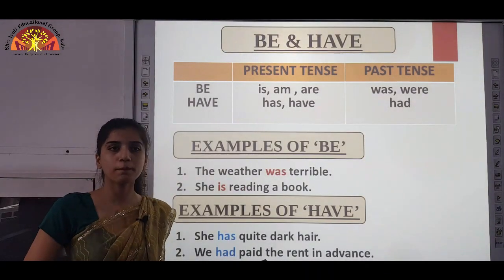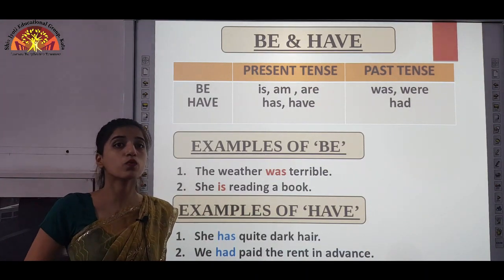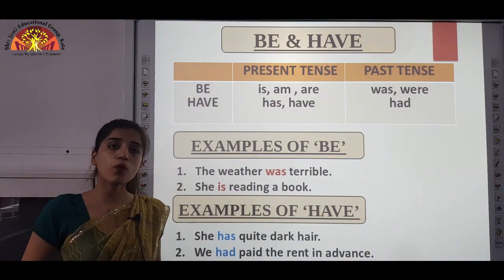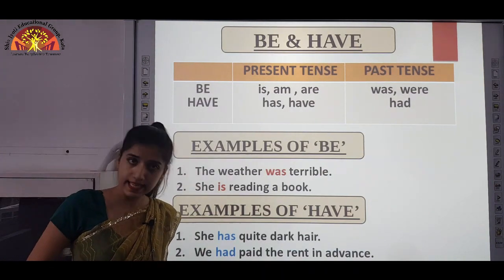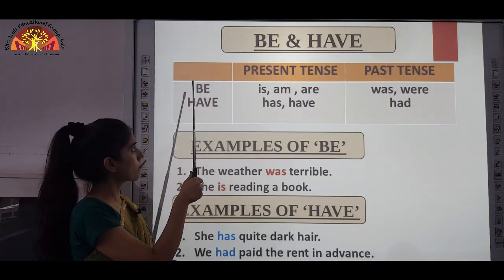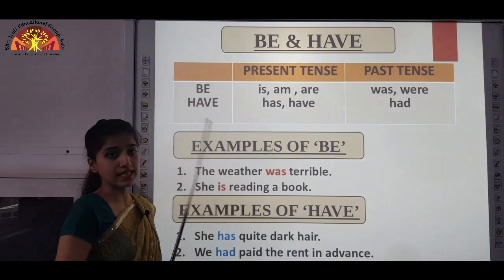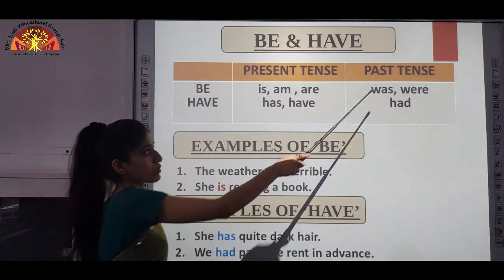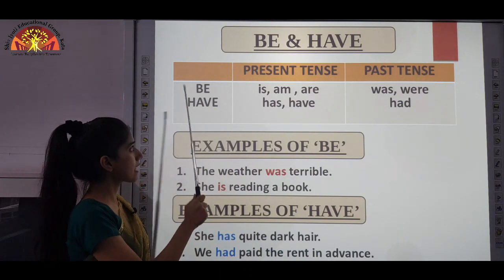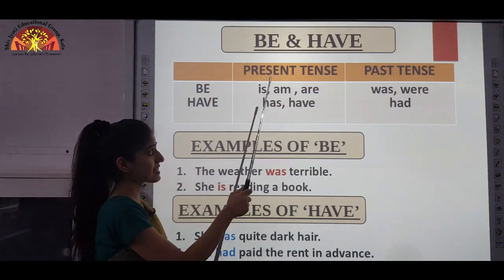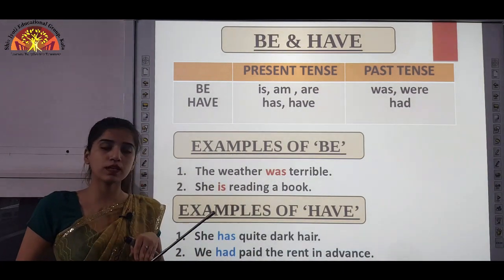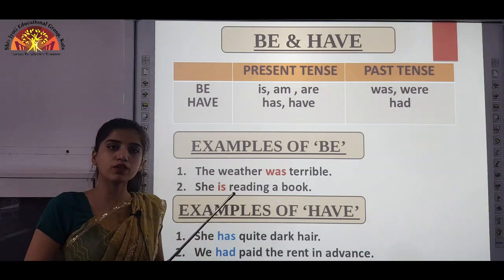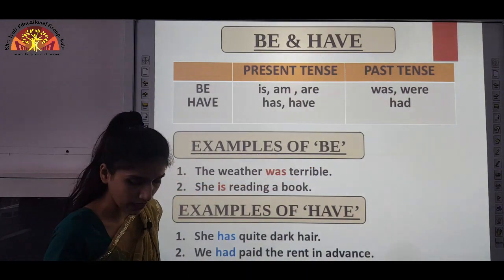As you have seen in the auxiliary verbs chapter, we studied about verbs and auxiliary verbs — the be form and have form of the verb. The be form in present tense uses is, am, are; in past tense we use was and were. The have form: for present tense we use has and have, and for past tense of the have form, we use had.